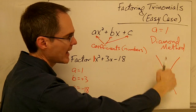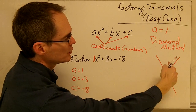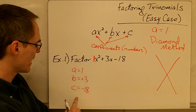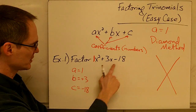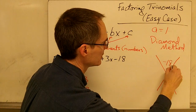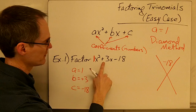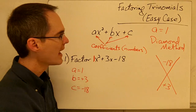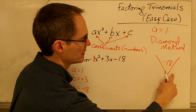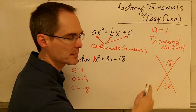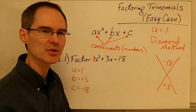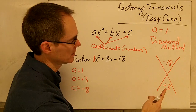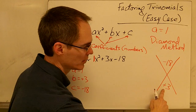The diamond method uses this big x — which for some reason is called a diamond. In the top part of the x you write down the value of the c coefficient, which in this case is negative 18. In the bottom you write the value of your b coefficient, which is positive 3. You want to find two numbers for the sides of the diamond that multiply together to give you negative 18 and add together to give you positive 3.